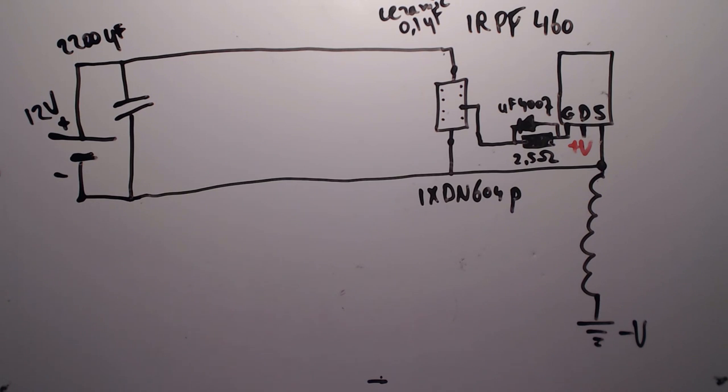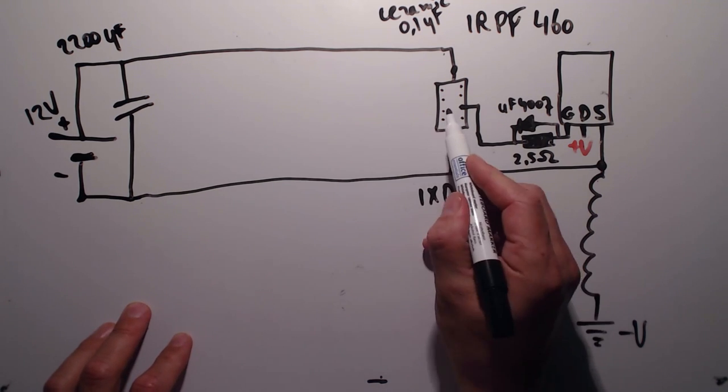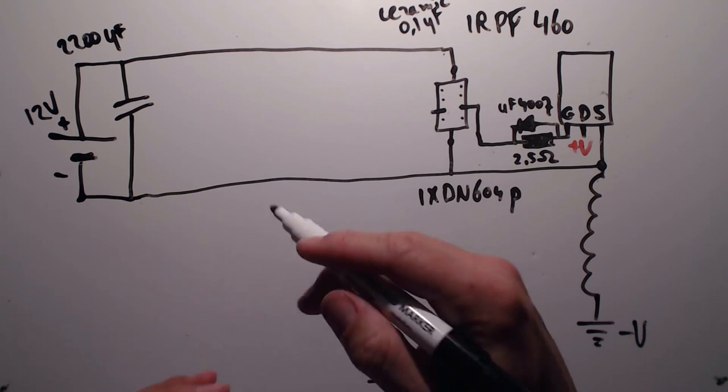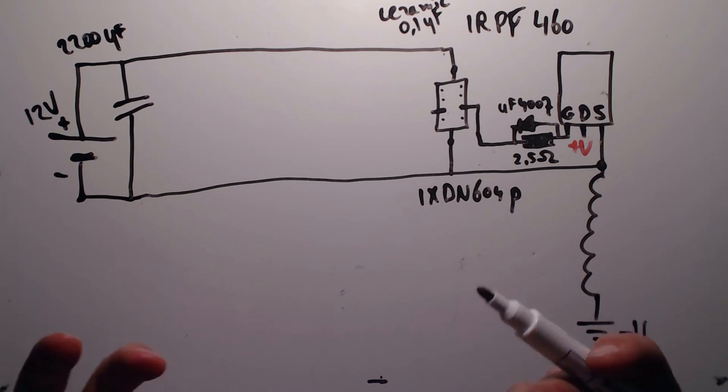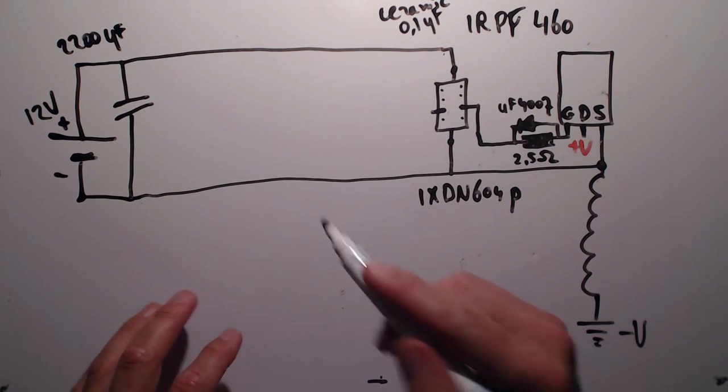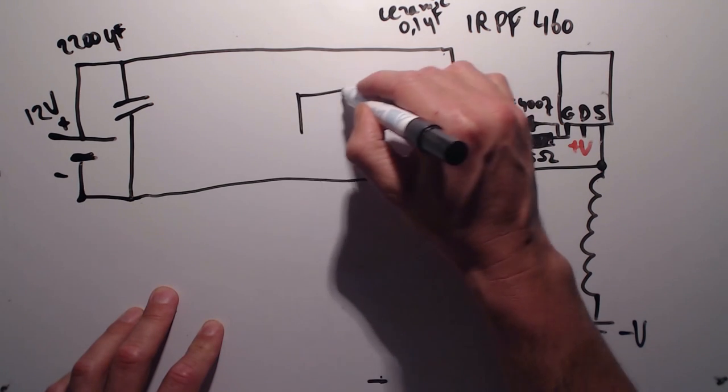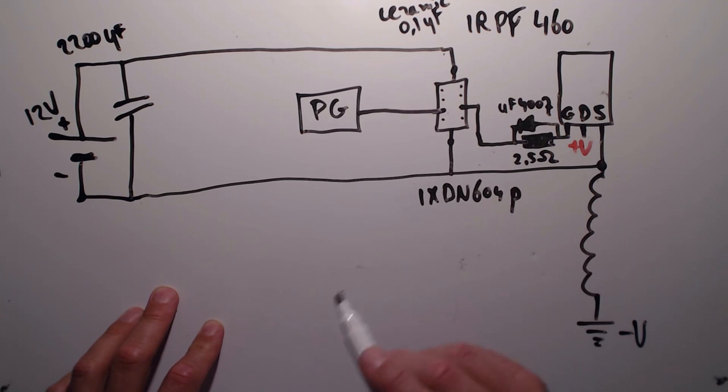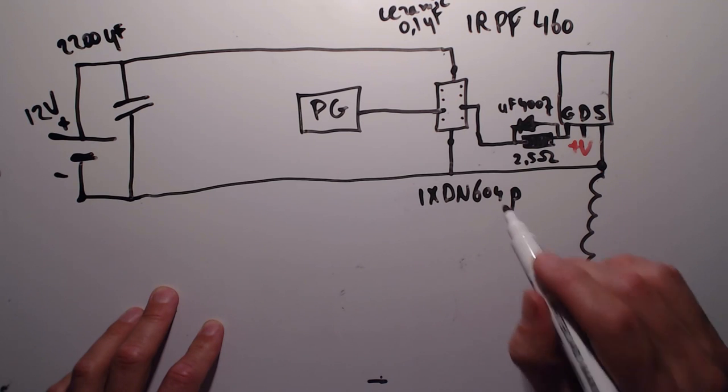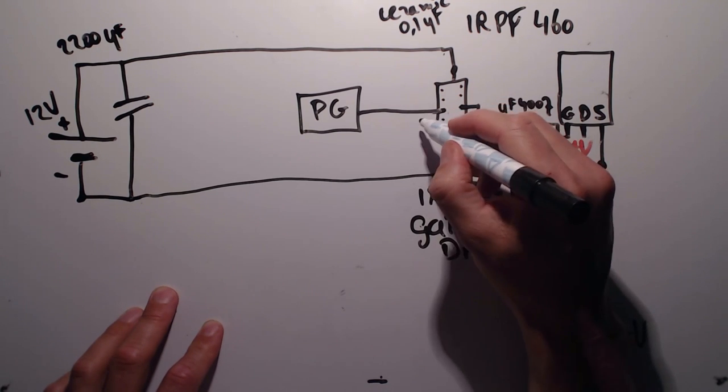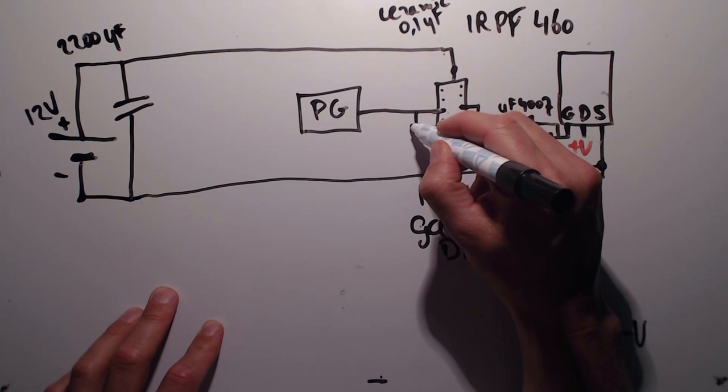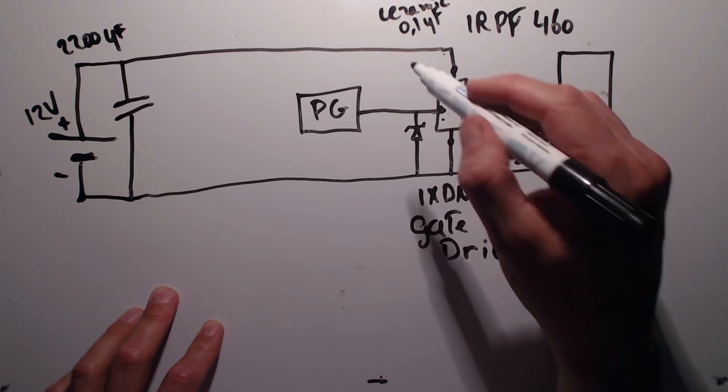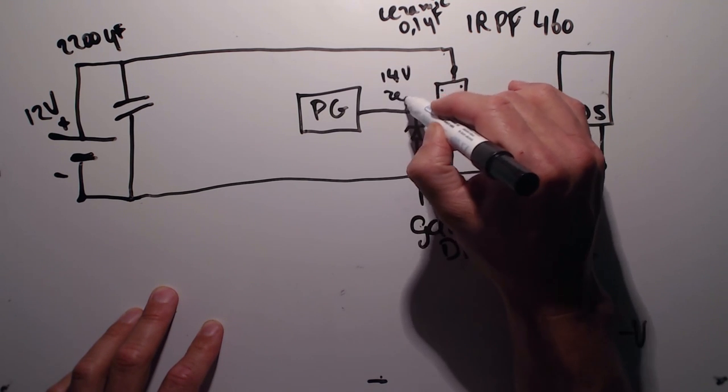The fast-acting switch for high frequencies. Now, this gate driver IC is needed because the frequency, the pulses, are really high in frequency and are generated by my pulse generator. The output is directly connected to the input of that IXDN604 gate driver. And for protection, I have a Zener diode to ground here. So it won't blow up. This is a 14-volt Zener diode.